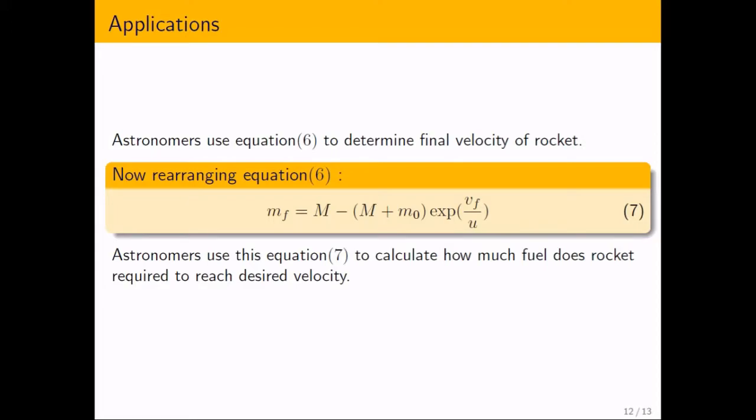Astronomers use this equation 7 to calculate how much fuel does rocket required to reach desired velocity.